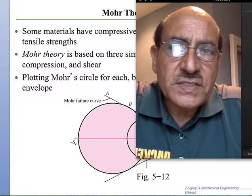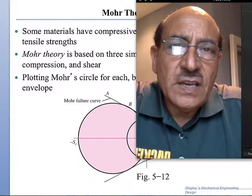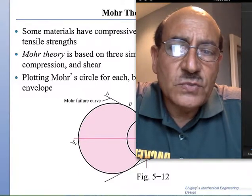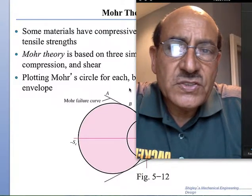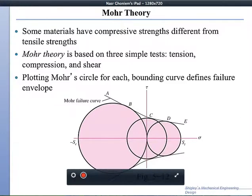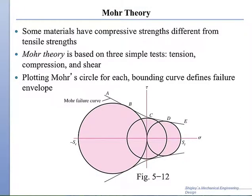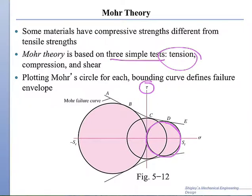So if you have a three-dimensional system, you have sigma 1, sigma 2, sigma 3, then you can basically plot two more circles — one for tension, one for compression. The theory looks like this. We make three simple tests: one tension test, and in this tension test we plot a circle on the Mohr plane, which is the relationship between the shear stress and the principal stresses. This will be for pure tension.